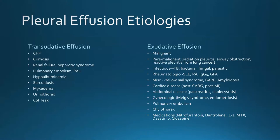There are many etiologies for transudative effusions: CHF, cirrhosis, renal failure, nephrotic syndrome, hypoalbuminemia, sarcoid — which can fall into both transudative and exudative categories — as well as PE, urinothorax from a urinary-thoracic fistula, and CSF presenting as a transudative effusion. Exudative etiologies include infectious, rheumatologic, yellow nail syndrome, asbestos-related effusions, post-cardiac surgery, post-MI, abdominal or gynecologic causes, and medications. Going through this differential for an undifferentiated pleural effusion is always quite important.